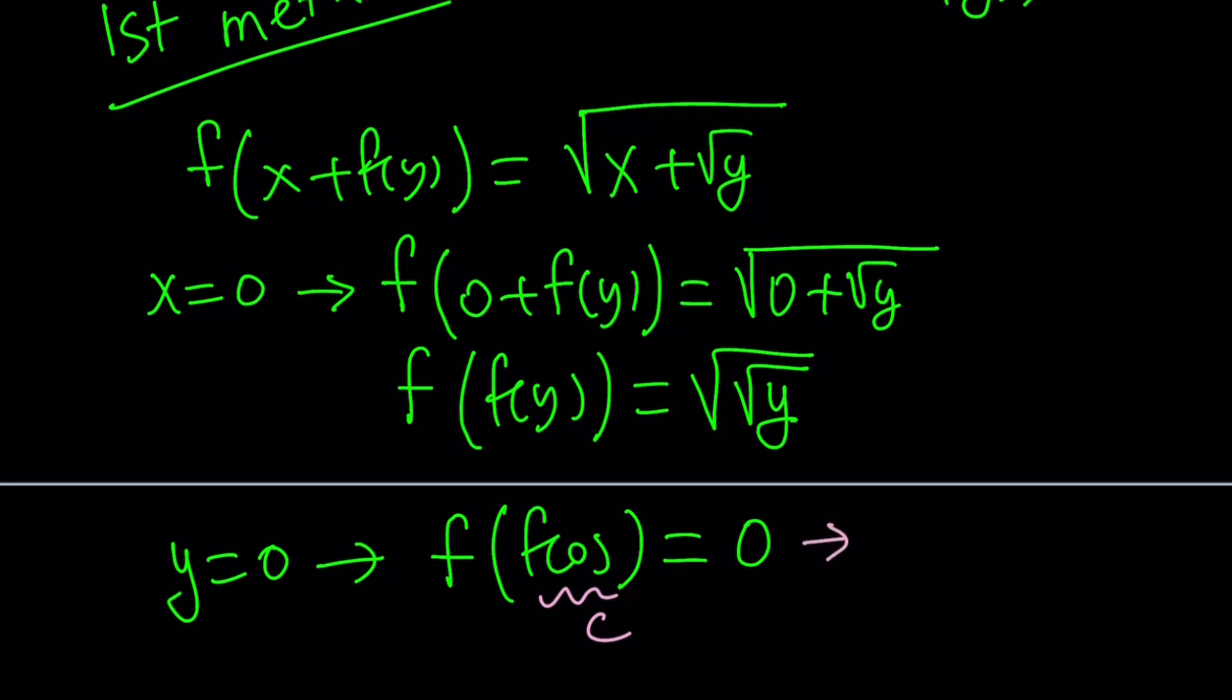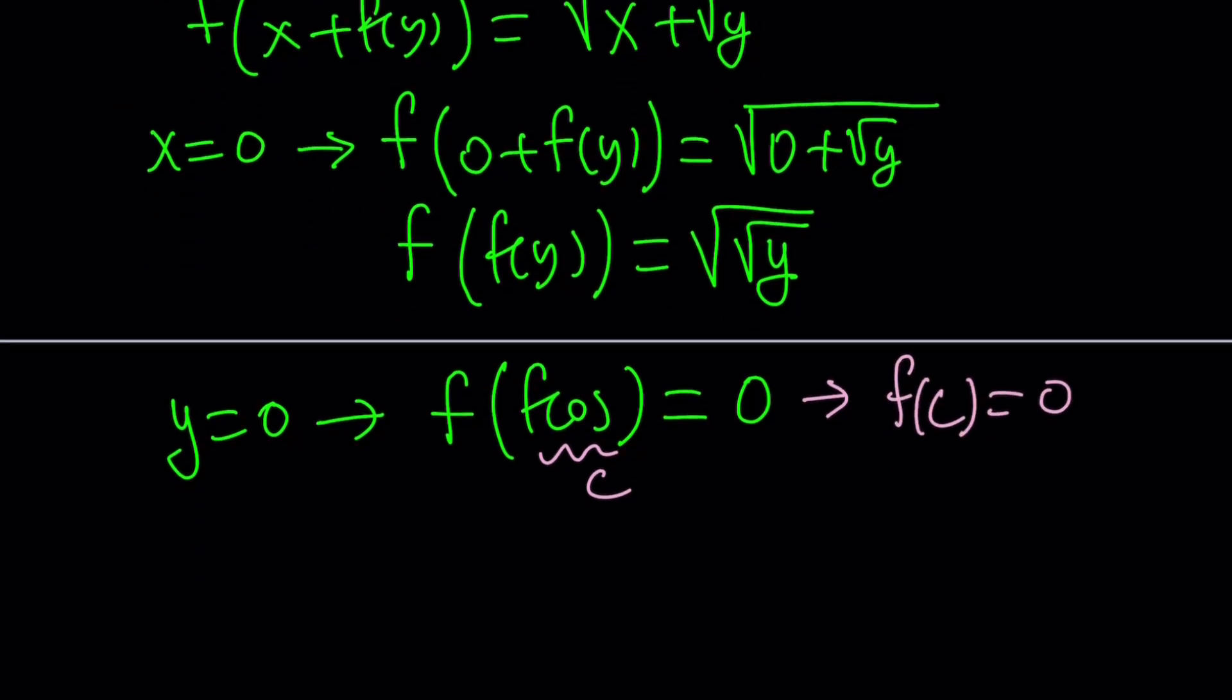So from here, we get two things. First, f of c is 0. But because of our naming convention, we also get f of 0 equals c. Which is kind of interesting, right? They kind of interchange. Great. Let's go ahead and save that information because we're going to use that in a little bit.